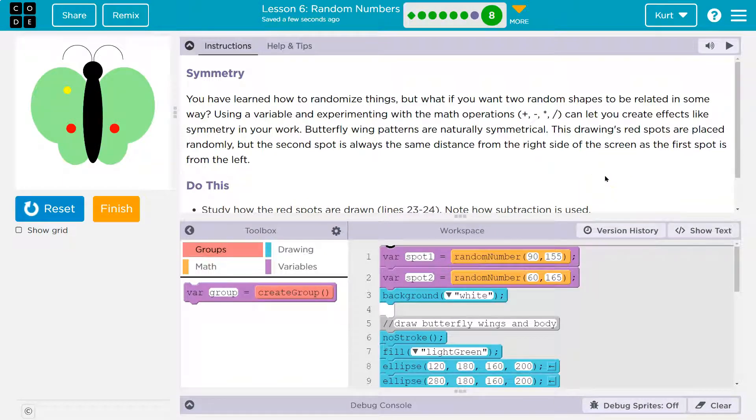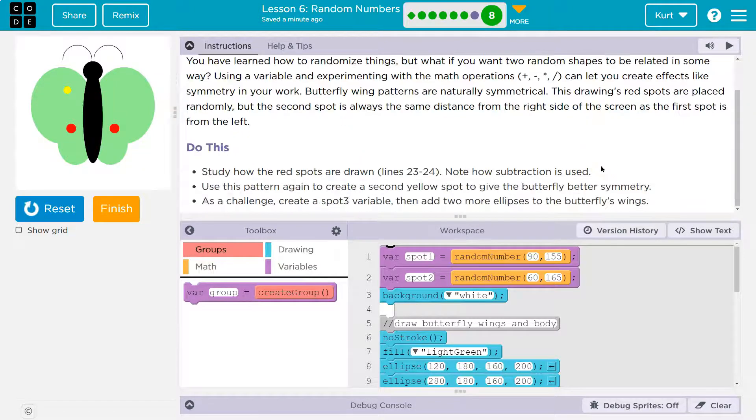Butterfly wing patterns are naturally symmetrical. That's pretty cool. The drawing's red spots are placed randomly, but the second spot is always the same distance from the right side of the screen as the first spot is from the left. Yeah, that would make it symmetrical.